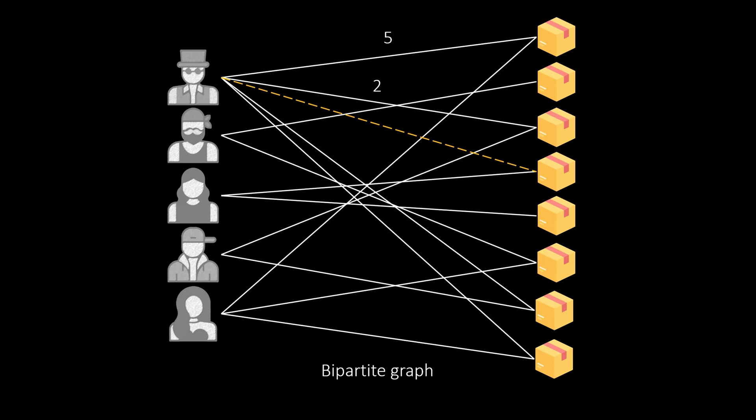One immediate advantage of GNNs compared to matrix factorization is that they are able to aggregate multi-hop neighborhoods whereas matrix representations typically only account for direct connections. For the next minutes I want to invite you to a journey through some of the literature on this topic and I hope that you enjoy it.